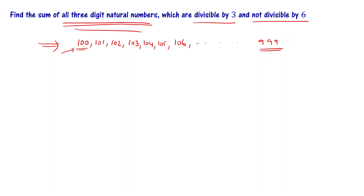We have to find which of these are divisible by 3. 100 is not divisible by 3. 101 is also not divisible by 3. 102 is divisible by 3 — the sum of digits of 102 is 1+0+2 = 3, and 3 divided by 3 equals 1. So 102 is divisible by 3.